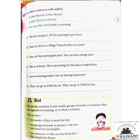Number 5: 'You can have pineapple juice. You can have orange juice.' The answer is: 'You can have pineapple juice or orange juice.' Number 6: 'She is at home. She is practicing for the dance competition.' The answer is: 'She is at home and practicing for the dance competition.' Number 7: 'Are we leaving today? Are we leaving tomorrow?' The answer is: 'Are we leaving today or tomorrow?'